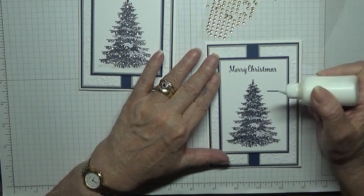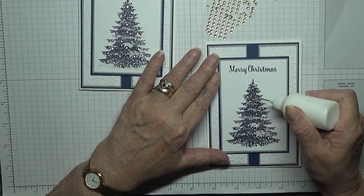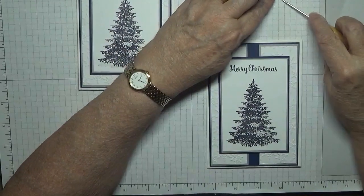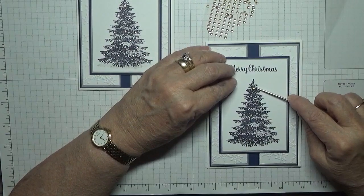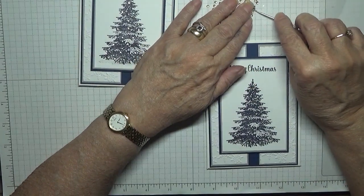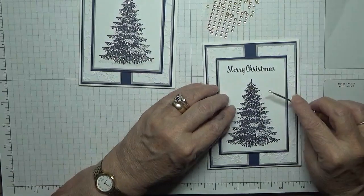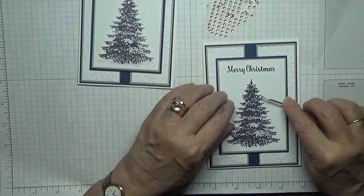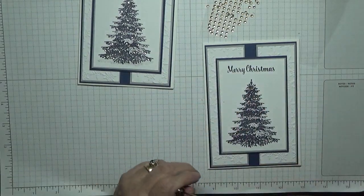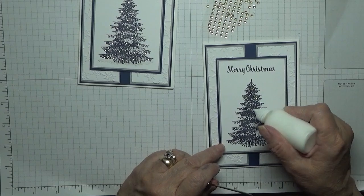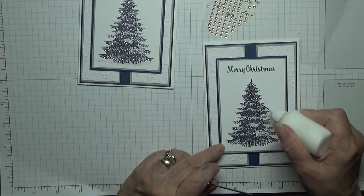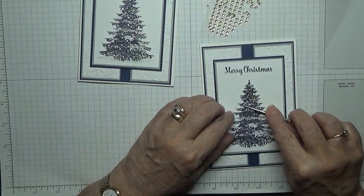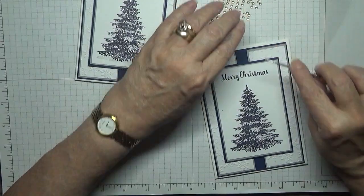So I am just putting a tiny blob of glue on each gem. Because when I did the silver ones, I put too much glue and it made the blue ink run.